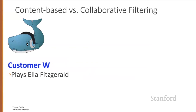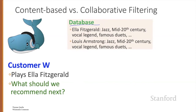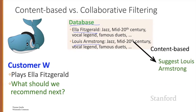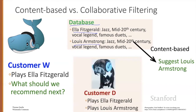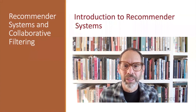Let's see an intuition of the difference between content-based and collaborative filtering recommendations. Here's customer W who's playing that Ella Fitzgerald song — what should we play them next? One source of information is a database in which songs or musicians have content features: we know that Ella Fitzgerald is a mid-20th century jazz vocal legend who recorded many famous duets, and these content features tell us that Louis Armstrong is also a mid-20th century jazz vocal legend who recorded many famous duets, so we suggest Louis Armstrong. This is called content-based recommendation. An alternative source of information comes from customer D, who played an Ella Fitzgerald song too but also played Louis Armstrong, so we might suggest Louis Armstrong for customer W as well. Systems that rely on using information from other users' choices are called collaborative filtering recommender systems.